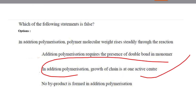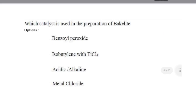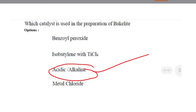Next question: which catalyst is used in the preparation of Bakelite? The options were benzoyl peroxide, isobutylene with TiCl₄, acidic or alkaline, and metal chloride. Option 3 is correct — an acidic or alkaline catalyst is used in the preparation of Bakelite.